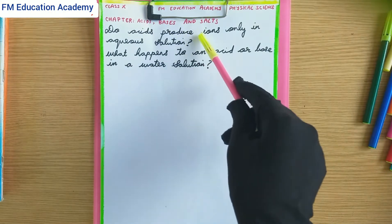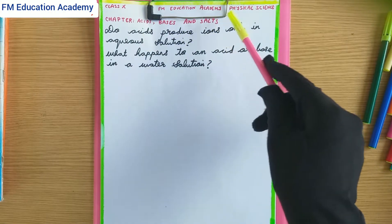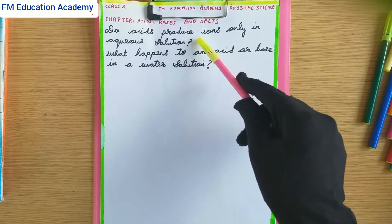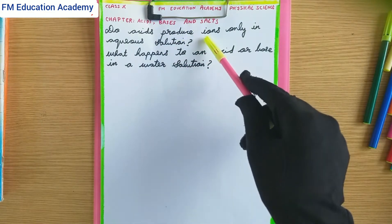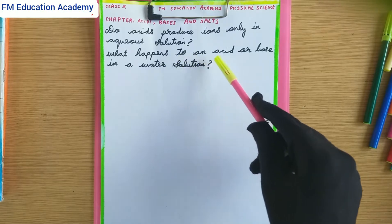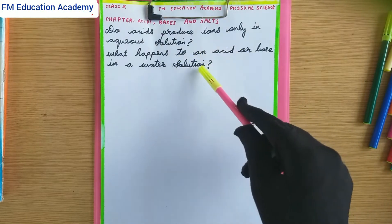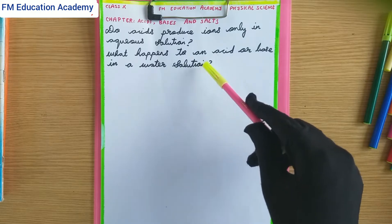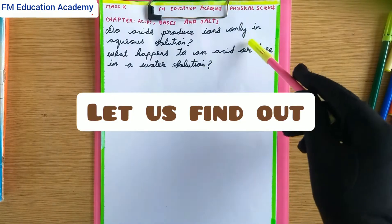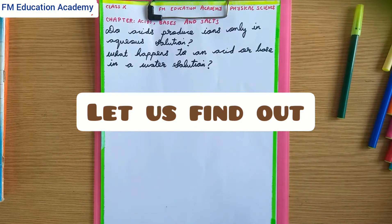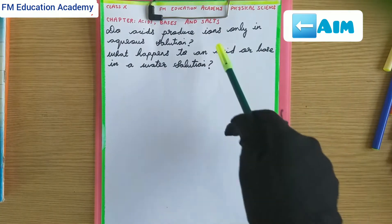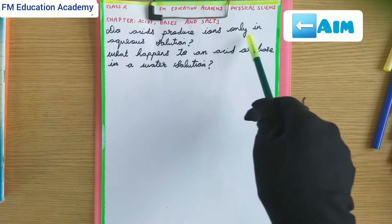Do acids produce ions only in aqueous solution, that is in a watery solution or liquid? And what happens to an acid or base in a water solution? The aim of this experiment is to test whether acids produce ions only in aqueous solution.